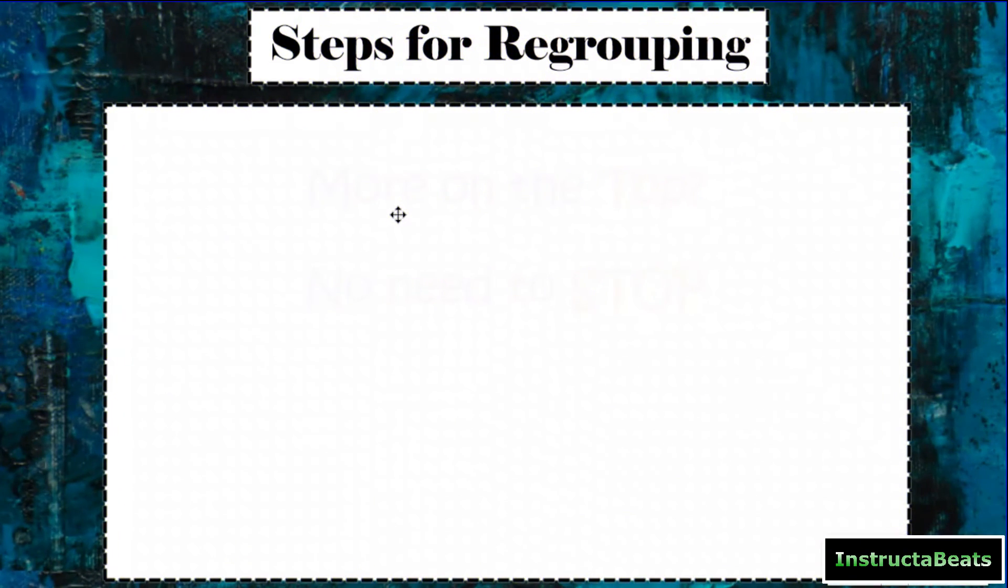So before we get to our steps for regrouping, if you don't know the steps for using the standard algorithm, go ahead and start with our standard algorithm no regrouping video. But our steps are we put the bigger number on top. We line up our place values, our ones place, our tens place, our hundreds, or if you're doing thousands or ten thousands are lined up, and you start with the ones place and go right to left.